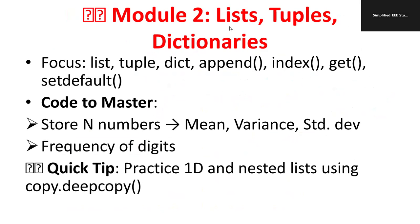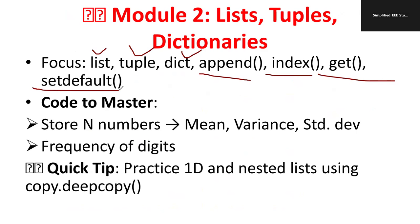Moving on to the second module, you need to focus on three types of data types: list, tuple, and dictionaries. Study the definition of each — what is a list, what is a tuple, what is a dictionary — then study list methods, tuple methods, and dictionary methods. The most important methods are: append method, index method, get method, and set default method. These are the repeated methods which usually come in the examination.